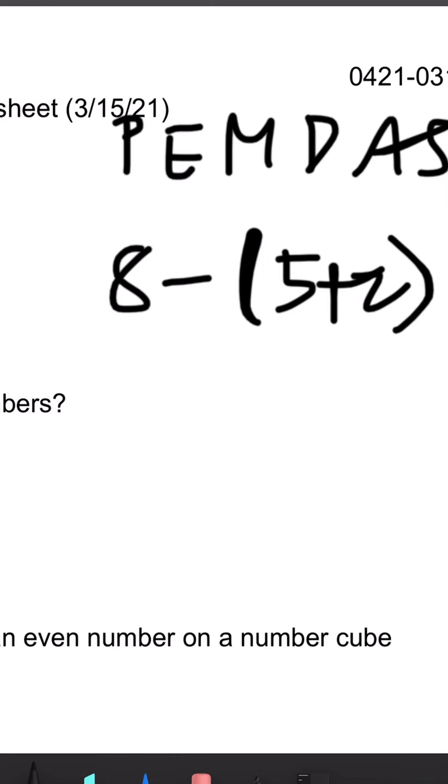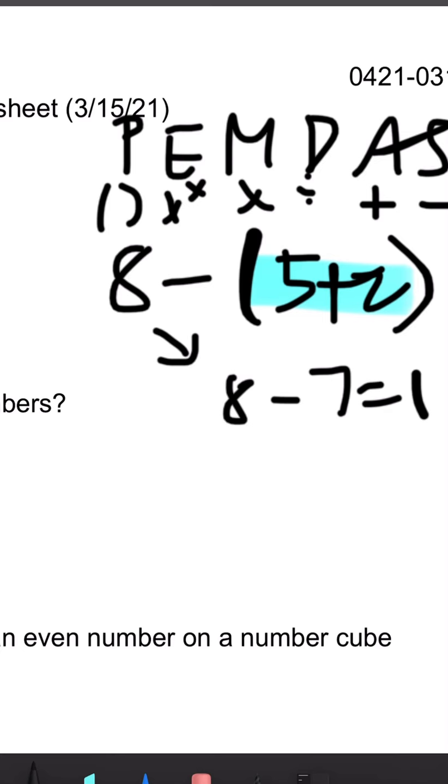And as you guys probably already know, these are the steps that you're going to solve your problems with. So we have parentheses, exponents, multiplication, division, addition, and subtraction. So we'll do P first, parentheses. 5 plus 2 is 7. Next we'll be bringing the 8 down. 8 minus 7 is 1.